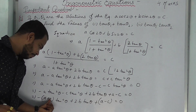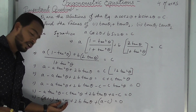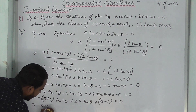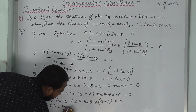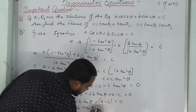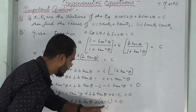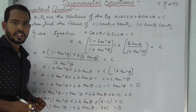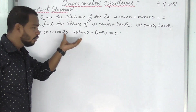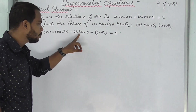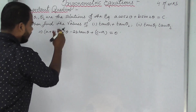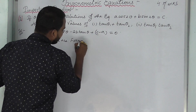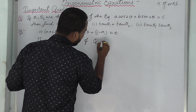Multiplying through by minus one to make the leading coefficient positive, the equation becomes: (A plus C) tan²θ minus 2B tanθ minus (A minus C) equals 0, which simplifies to (A plus C) tan²θ minus 2B tanθ plus (C minus A) equals 0. This is now a quadratic equation in tan θ, in the standard form ax² plus bx plus c equals 0, with two roots.